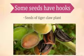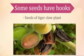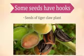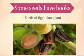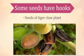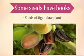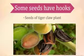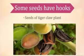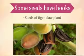Some seeds have hooks. Look at the seeds of the tiger claw plant — they have a little hook-like structure. They stick to the bodies of animals with this hook, and in this way they disperse from one place to another.